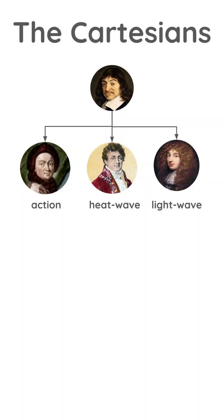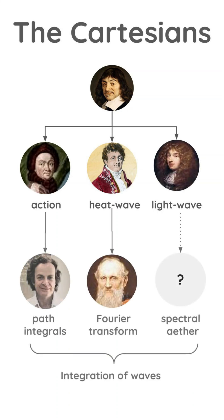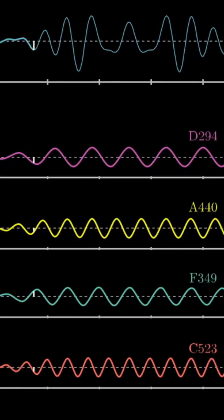Fourier, like Huygens and Kelvin, was a Cartesian who understood the wave nature of the universe. Kelvin unified the subjective or probabilistic waves into their objective reality through Fourier transformations, which are now used in signal processing.